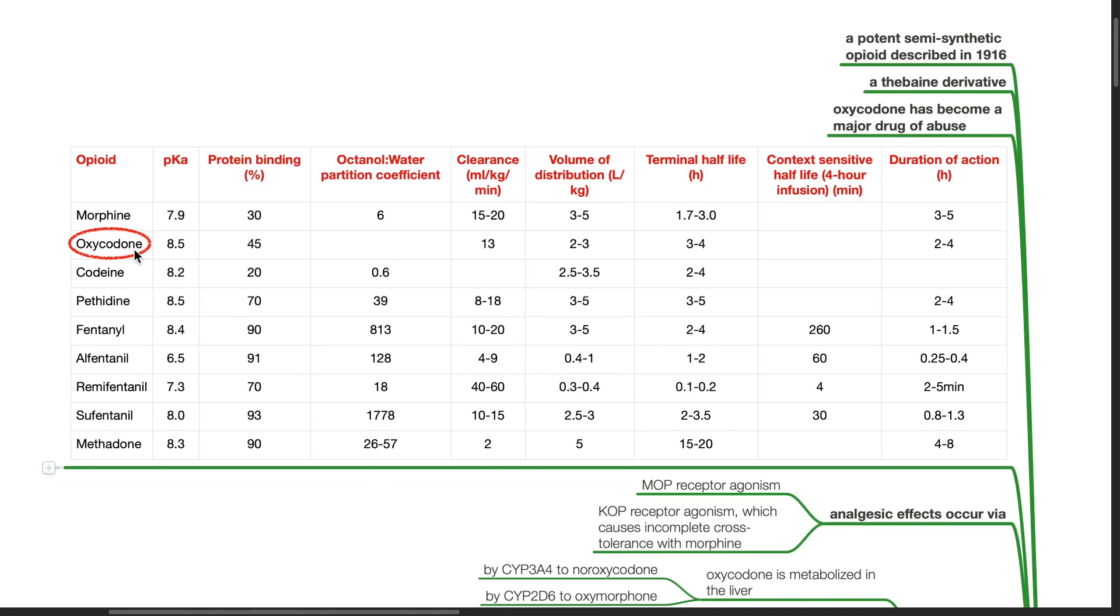Pharmacokinetics. pKa 8.5, protein binding 45%, clearance 13mL per kg per minute, volume of distribution 2 to 3 liters per kg. Terminal half-life and duration of action depends on the formulation.